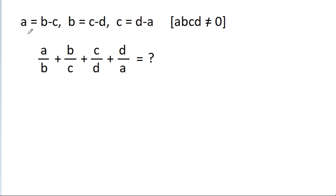In this video, we have given that a is equal to b minus c, b is equal to c minus d, and c is equal to d minus a, where a, b, c, d is not equal to 0. And we have to find the value of a by b plus b by c plus c by d plus d by a.